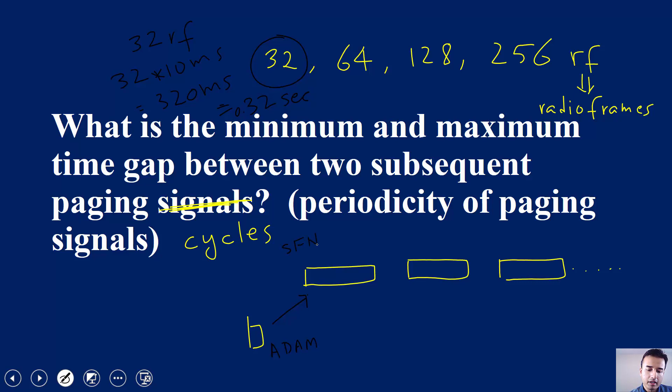System frame number one. Let's say it wakes up at system frame number one in order to see if it is being paged or not. Then the next time Adam's UE will wake up will be after 32 radio frames, which will be at system frame number 33. How come? Because if the paging cycle is 32, then first time it woke up at radio frame or system frame number one, second time it will wake up at radio frame 33.